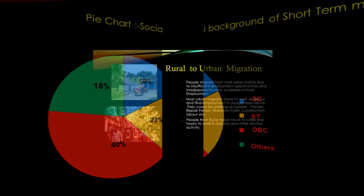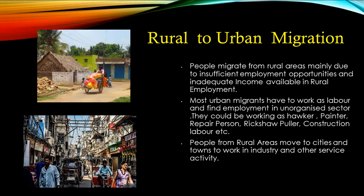Rural to urban migration is when people from rural areas migrate to urban areas. People migrate from rural areas mainly due to insufficient employment opportunities and inadequate income available in rural employment. When employment opportunities are not sufficient in the village, they move from rural to urban areas. Most urban migrants have to work as laborers and find employment in the unorganized sector — meaning no rules, regulations, or benefits. They work as hawkers, painters, repair persons, rickshaw pullers, or construction laborers. People from rural areas move to cities and towns to work in industries and other service activities.